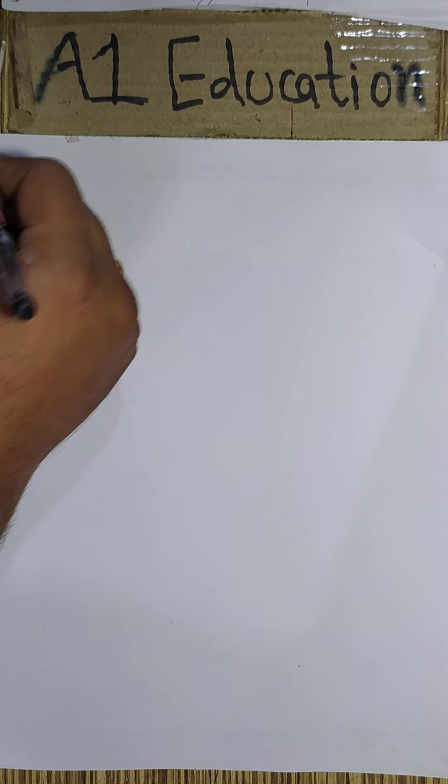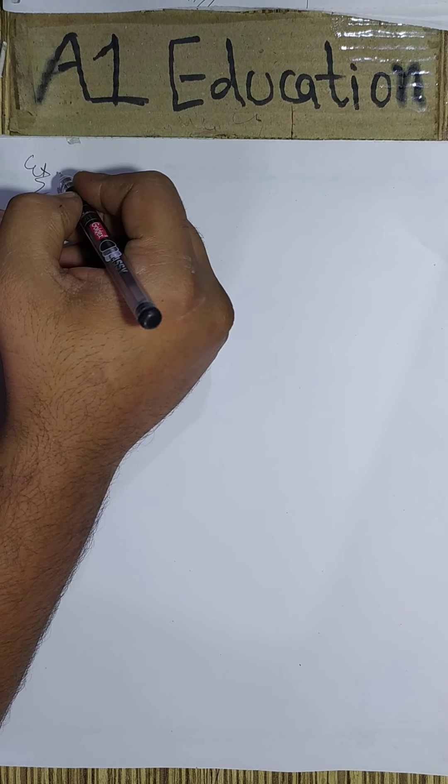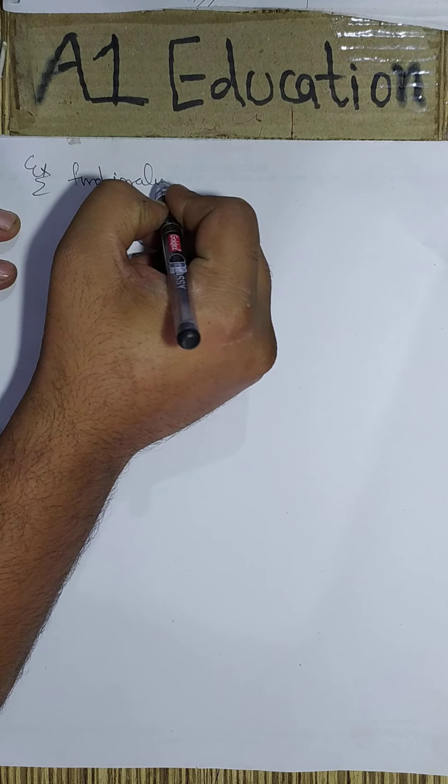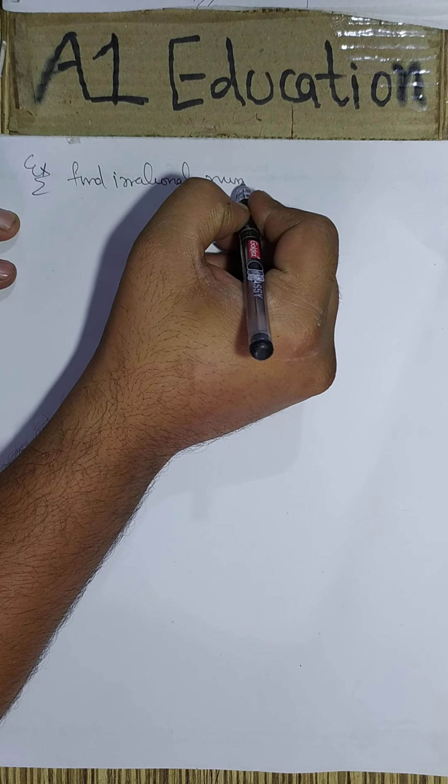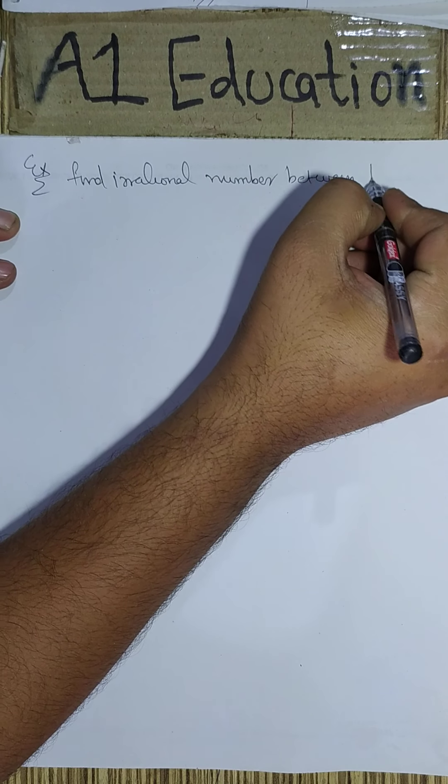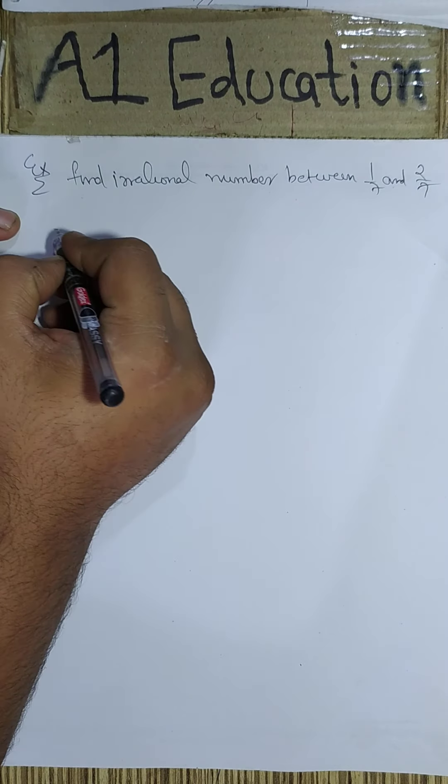The next example asks us to find an irrational number between 1/7 and 2/7. If we find out the values of 1/7, we get 0.142857. These numbers are recurring.